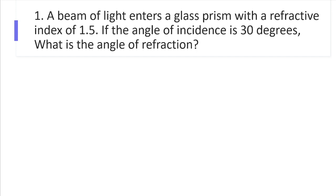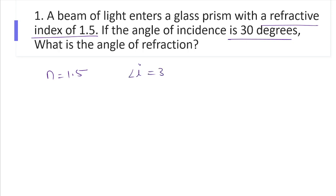A beam of light enters a glass prism with a refractive index of 1.5. When reading the question, I can highlight the points which are given to us. The refractive index is given as n = 1.5. The angle of incidence is 30°, so angle I = 30°. We are asked to find the angle of refraction.